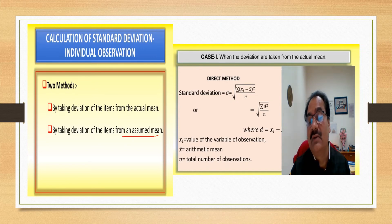So, in the case when the deviations are taken from the actual mean, then the direct method is: sigma equals summation of (x i minus x bar) whole square by n. Or we may also define summation of d square by n where d stands for x i minus x bar. Here, x i is the value of the variable observation, x bar is arithmetic mean and n is total number of observations.